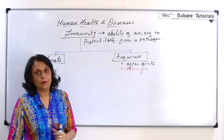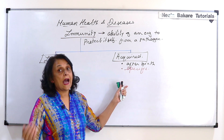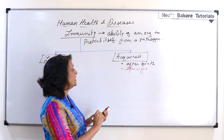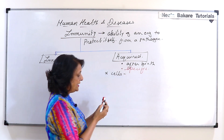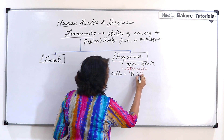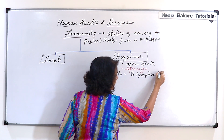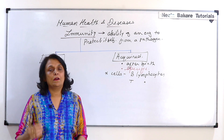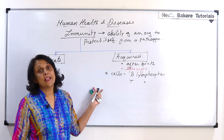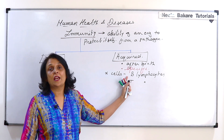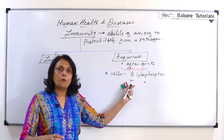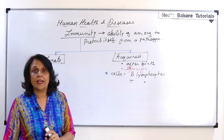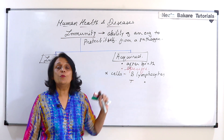Now let us talk about acquired immunity. Acquired immunity is what we get after birth and it is specific. There are two cells responsible for this acquired immunity: B lymphocytes and T lymphocytes. B cells produce antibodies, and T cells perform various functions. One type of T cell is called the helper T cell, and this helper T cell helps the B cell to produce the antibody.